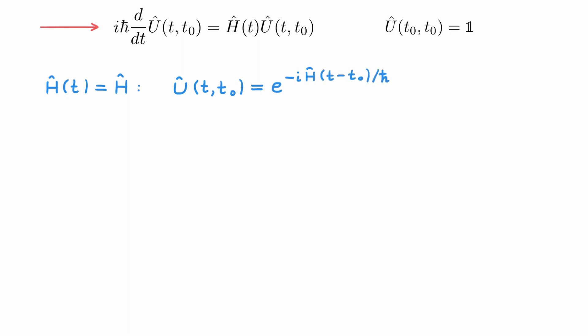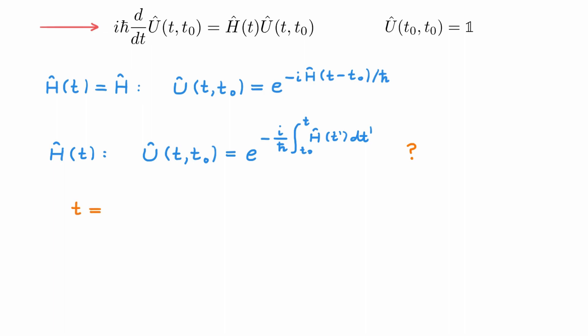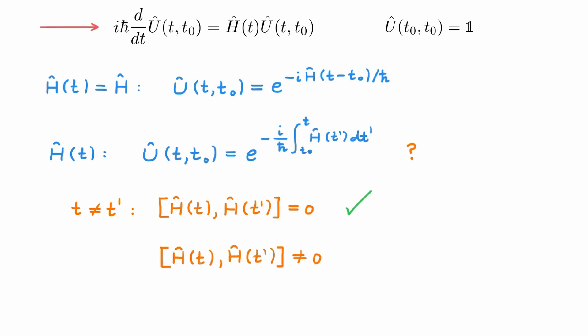You may be tempted to guess that if the Hamiltonian is time-dependent, the time evolution operator would look like the exponential of −i/ħ times the integral of H(t′)dt′. But unfortunately things are not so easy. If for t different from t′ the Hamiltonians at different times commute, then this expression would in fact be the correct solution. But in the most general case the Hamiltonians at different times do not commute, and then this solution does not work. In this more general case the solution can be written as a series called the Dyson series, but we're going to leave that for another video.